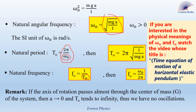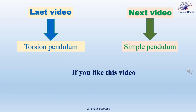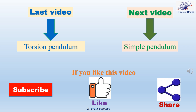Finally, let's discuss this remark: if the axis of rotation passes almost through the center of mass G of the system, then A tends to 0, because A is the distance between the center of mass and the axis of rotation. In the expression for T0, if A tends to 0, then T0 tends to infinity. Thus, there are no oscillations. If the system is suspended from its center of mass, it will rotate about the axis of rotation and therefore will not oscillate.